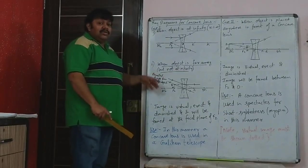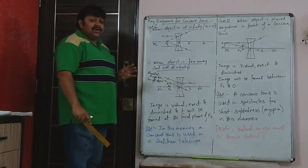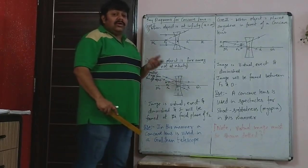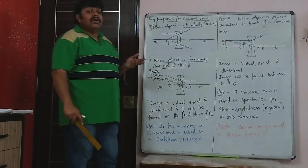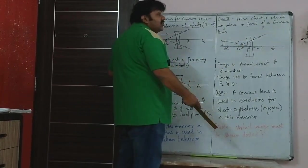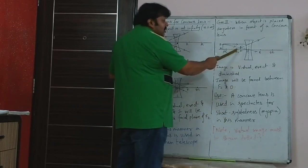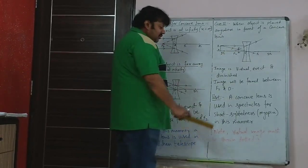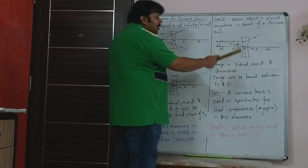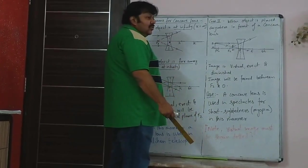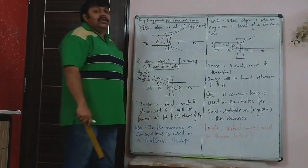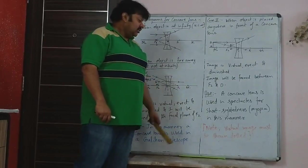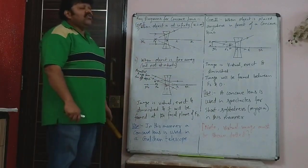Virtual images must always be shown as dotted — if you don't show it dotted, you lose one mark. In the last diagram of convex lens (object between O and F1 for simple microscope or reading glass), that image is also dotted. All dotted images are virtual images. Here the image is virtual, erect — erect because it is above the principal axis — and diminished. The image is always formed between O and F2. This is used for short-sightedness — treatment of myopia — in spectacle lenses. Virtual images must always be shown dotted.